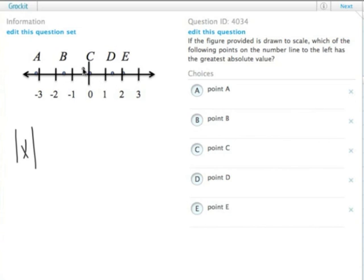All we have to do is look at this figure and figure out which one of these dots is furthest from zero. It's the one furthest out in either direction.